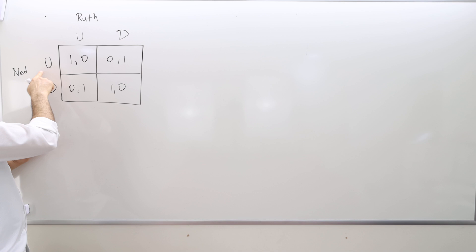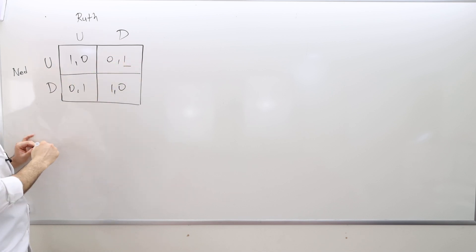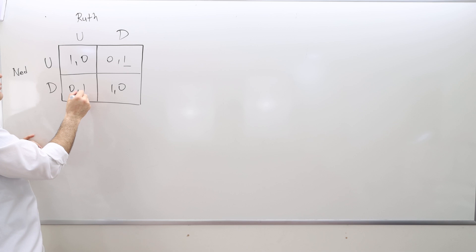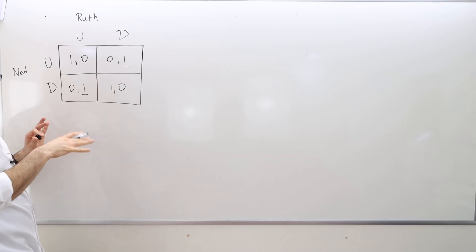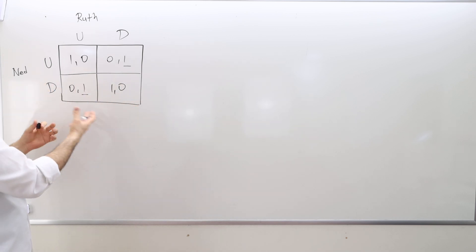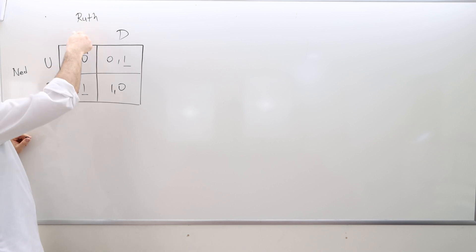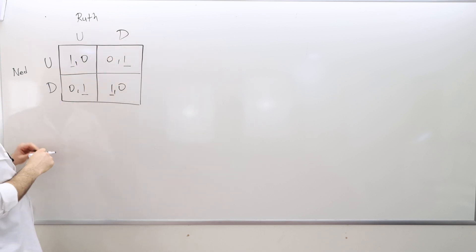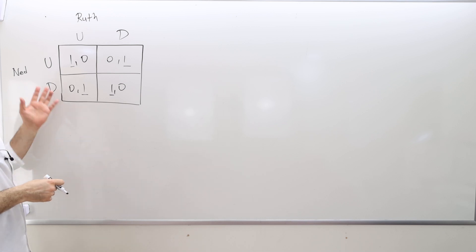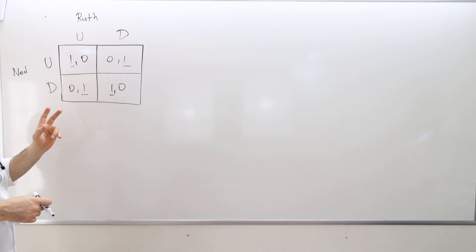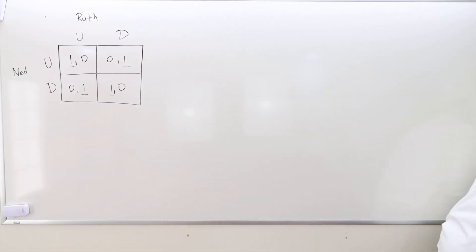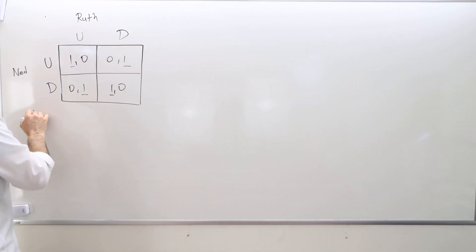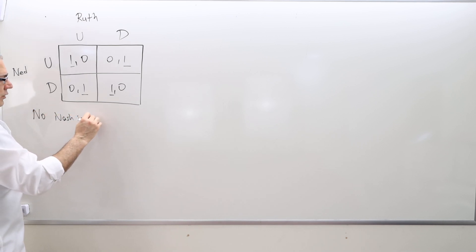For Nash equilibria: if Ned chooses upstairs, the best response for Ruth is to hide downstairs. If Ned looks downstairs, the best thing for Ruth is to hide upstairs. And if Ruth chooses U, the best response is U for Ned. If Ruth chooses D, the best response is D for Ned. I never underlined both numbers simultaneously, so there is no pure strategy Nash equilibrium in this game. You should definitely write: no Nash equilibrium in pure strategies.